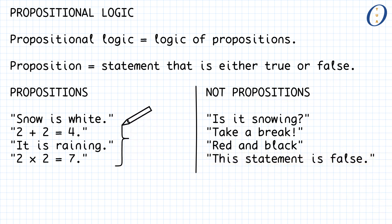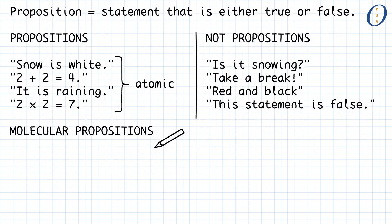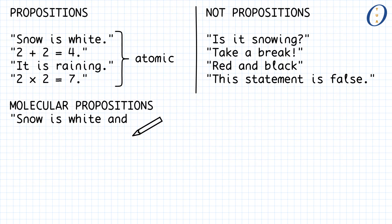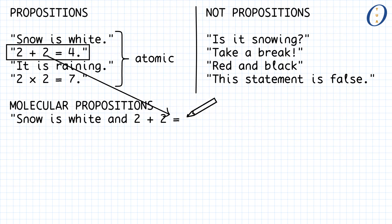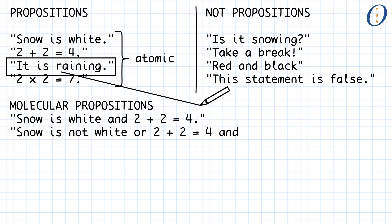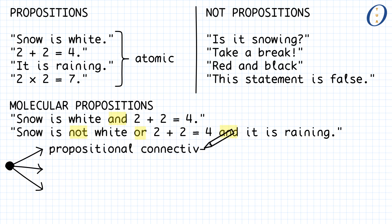All of our example propositions happen to be particularly simple. These propositions are called atomic, because they cannot be split into smaller propositions. But propositional logic also features more interesting propositions, which are called molecular. These are constructed by joining together smaller propositions. In this way, we can obtain propositions such as 'snow is white and 2 plus 2 is equal to 4,' or even more complicated ones like 'snow is not white, or 2 plus 2 is equal to 4 and it is raining.'